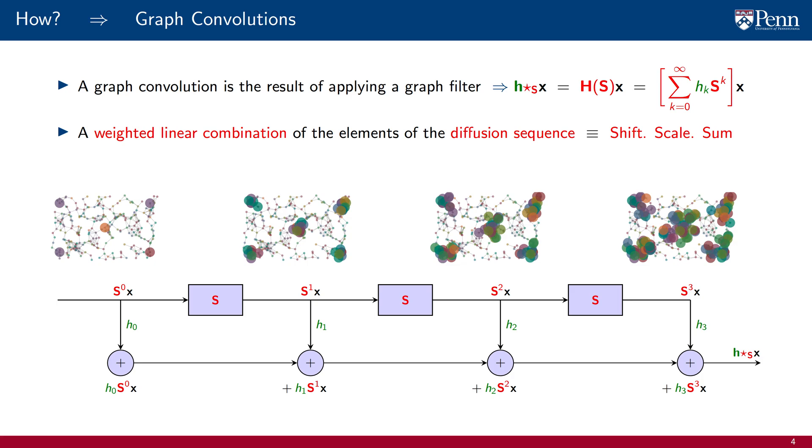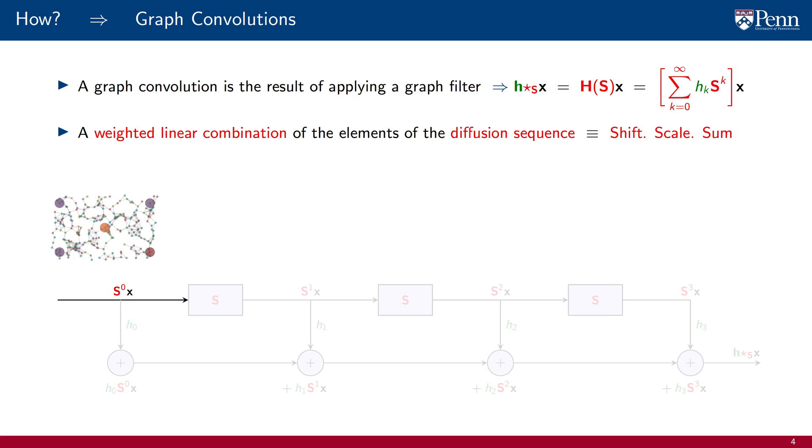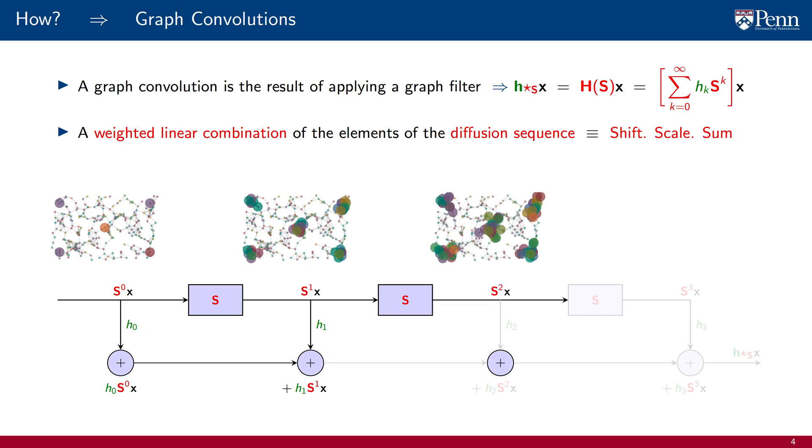A graph convolution recursively applies three operations: shift, scale, and sum. We begin with the signal X, which is rebaptized here as the zeros element of the diffusion sequence. We scale it by H0 and sum towards the output. We then multiply the signal X by the shift operator. We call this a shift, the result of which is the first element of the diffusion sequence. We scale it by H1 and sum it towards the output. We now apply the shift a second time. This produces element 2 of the diffusion sequence. We scale it by H2 and sum towards the output. Since this is a filter of order 3, the summation of these four scaled and shifted elements of the diffusion sequence is the graph convolution of the filter H with the signal X instantiated on the graph S.